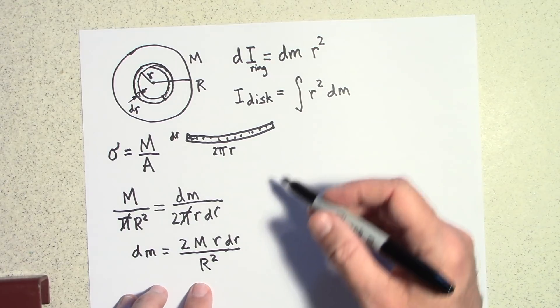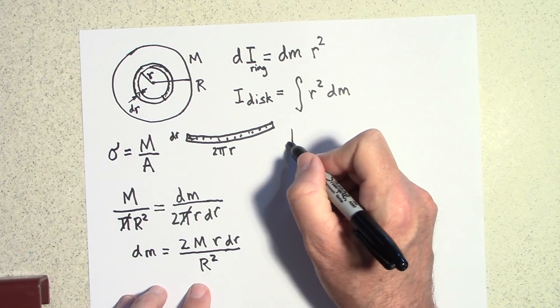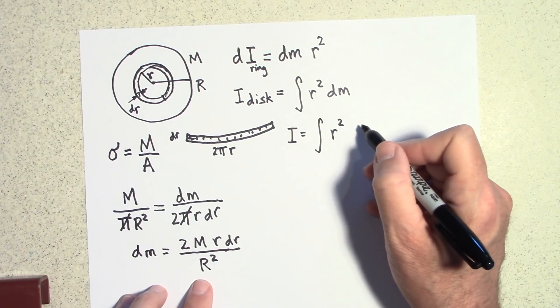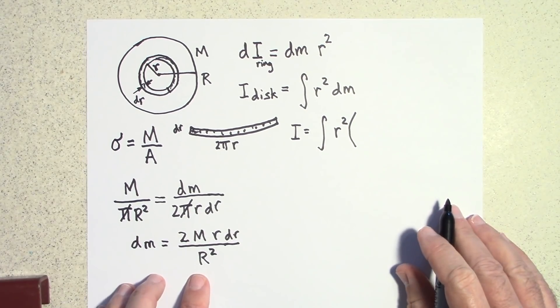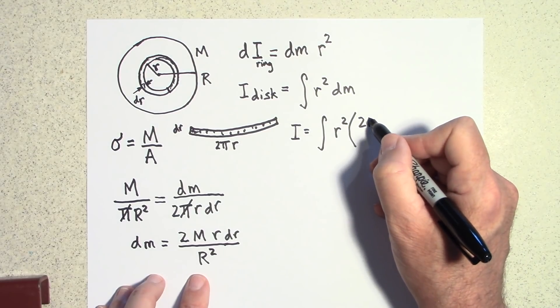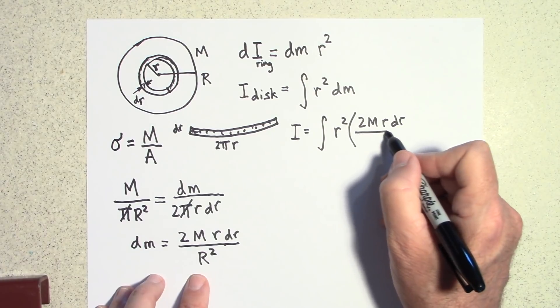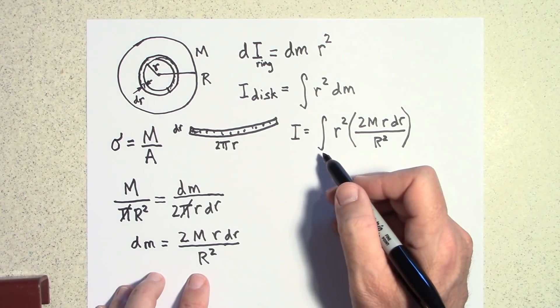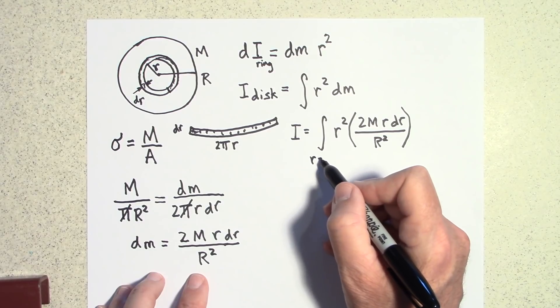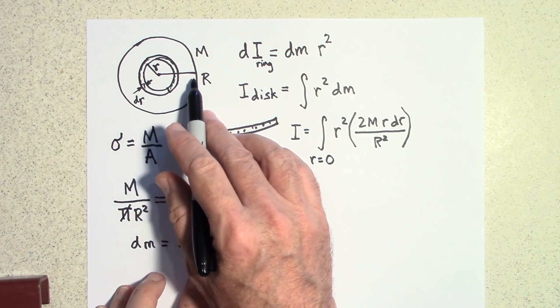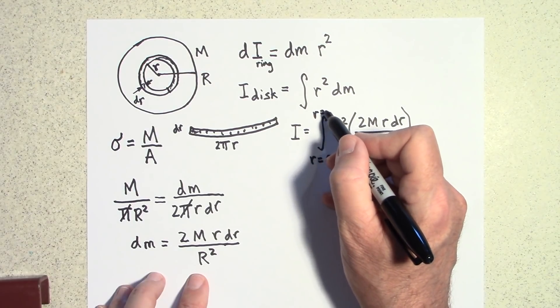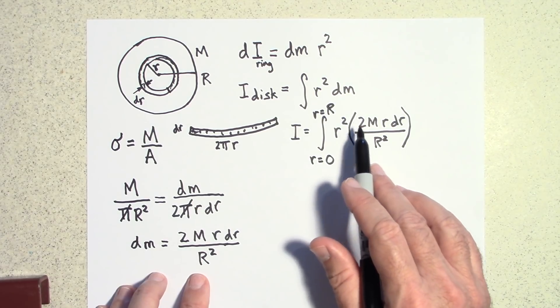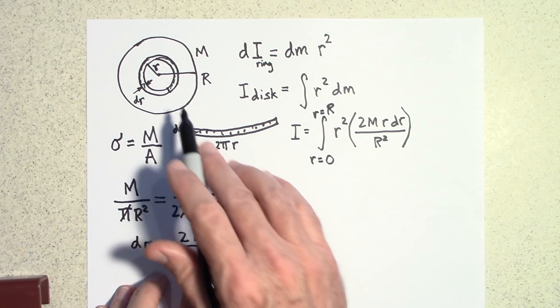Okay, so now I'm going to go ahead and I'm going to sub in there. So i of the disc which is what I'm after is going to be equal to r squared and then for dm I'm going to just transfer all this stuff up here. So dm is going to be 2m little r dr all over capital R squared. And then I'm going to tell the integral to start adding it when r equals zero, little r equals zero, and don't stop adding these rings until you get to r equals big R.